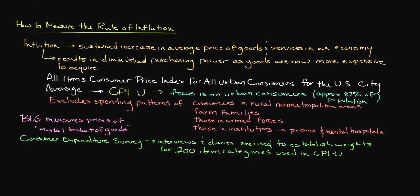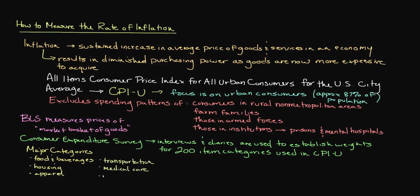The major categories in the CPIU include food and beverages, housing, apparel, transportation, medical care, recreation, education and communication, as well as other goods and services.